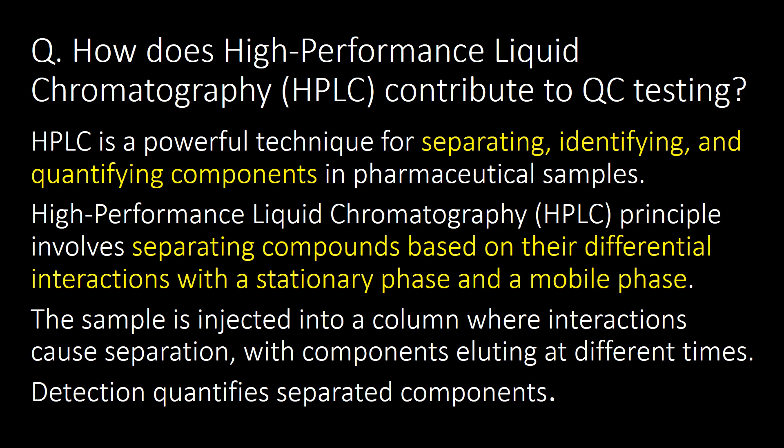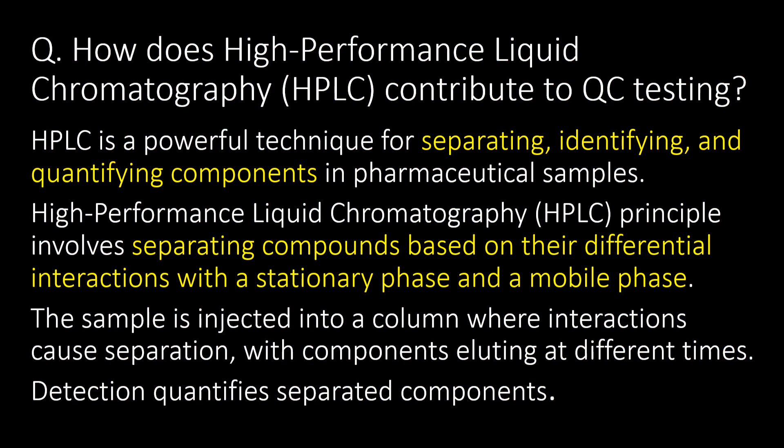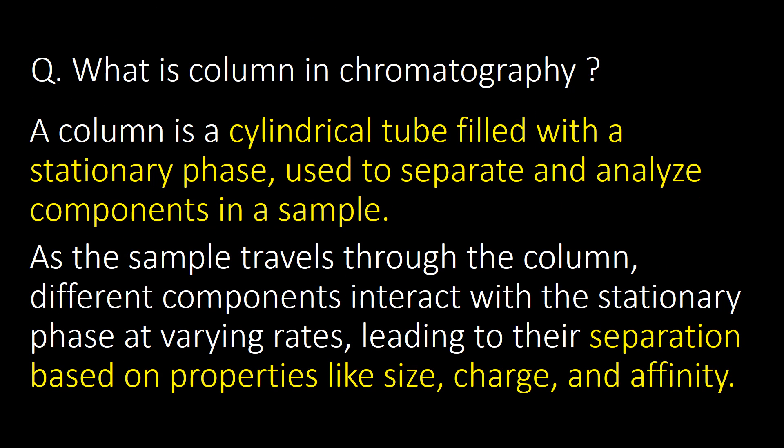With components eluting at different times, detection quantifies the separated components. What is a column in chromatography? A column is a cylindrical tube filled with stationary phase used to separate and analyze components in a sample. As a sample travels through the column, different components interact with the stationary phase at varying rates, leading to their separation based on properties like size, charge, and affinity.